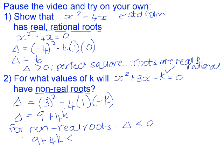So therefore, 9 + 4k will be less than 0, so 4k will be less than -9, and if we divide both sides by 4, k will be less than -9/4. So in other words, so long as the value of k is a number smaller than -9/4, the equation as a whole will have non-real roots.